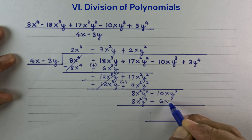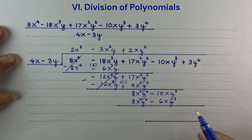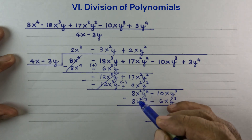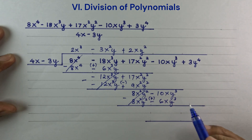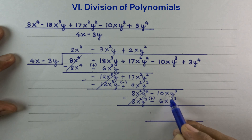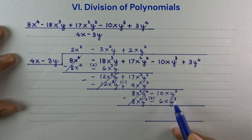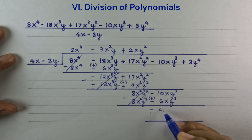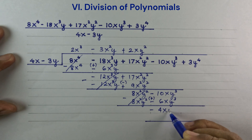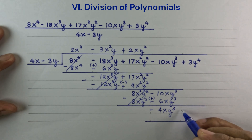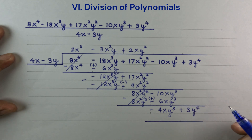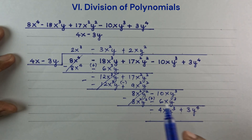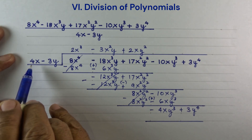Minus 6xy cubed. So let us subtract — 8x squared y squared cancels out. The minus sign here becomes plus, so minus 10xy cubed plus 6xy cubed is minus 4xy cubed. Now let's bring down plus 3y to the 4th. Minus 4xy cubed divided by 4x is minus y cubed.